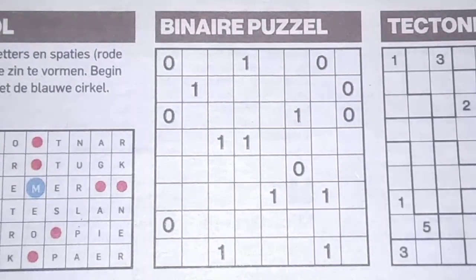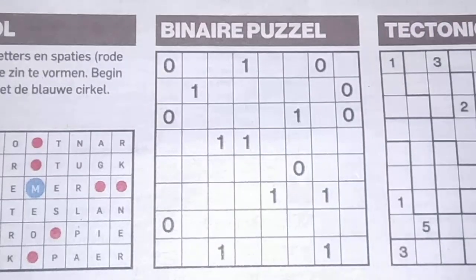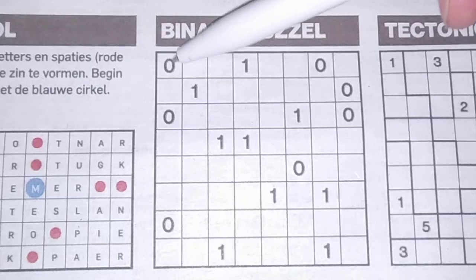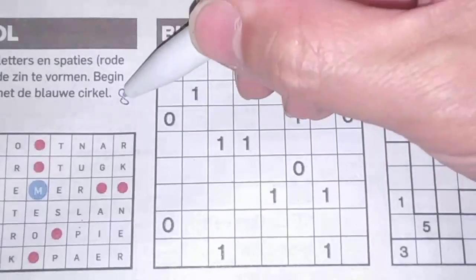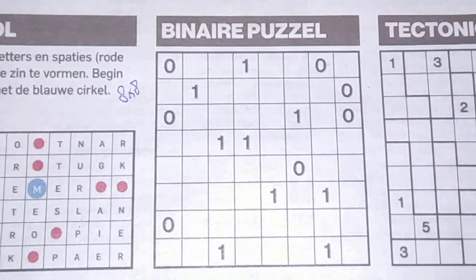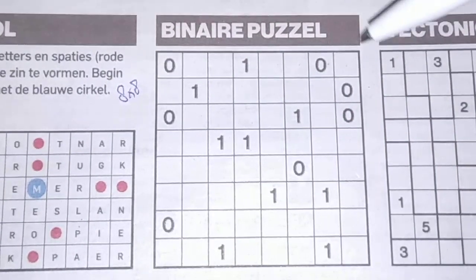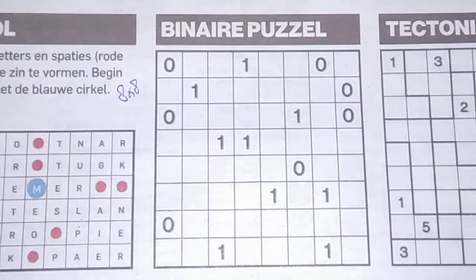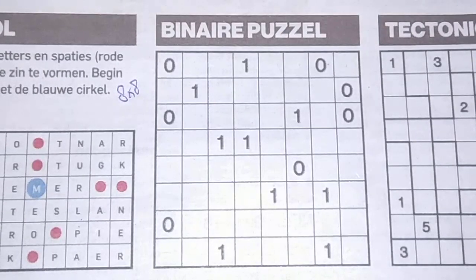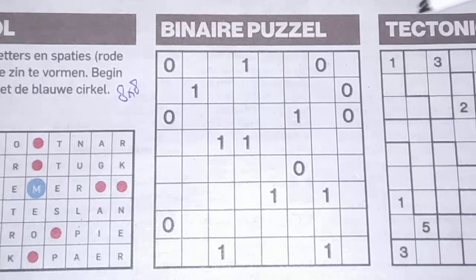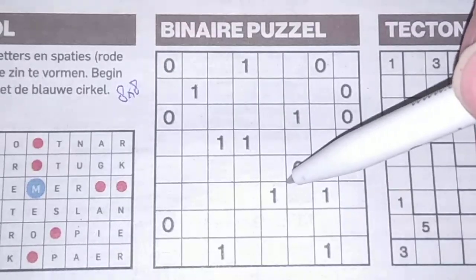Hi everyone, welcome back with the fifth Sudoku — a binary Sudoku. Let me count: one, two, three, four, five, six, seven, eight. It's an eight-by-eight binary Sudoku, which means in every row or column there are always four zeros and four ones. Let's get started.